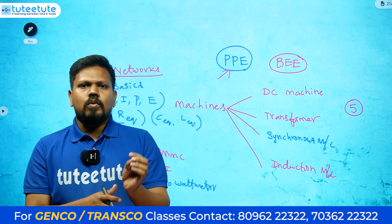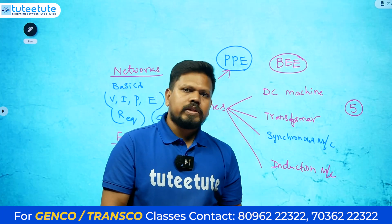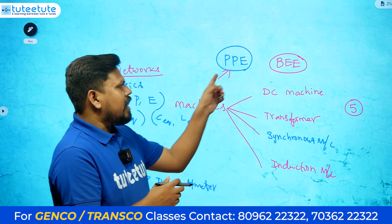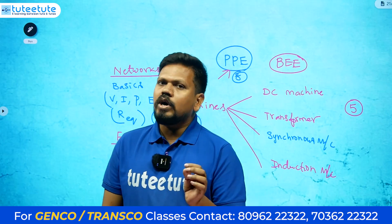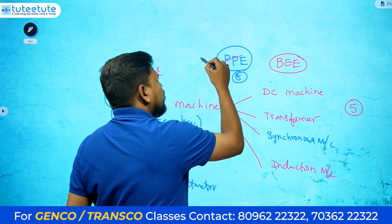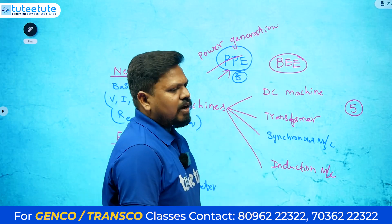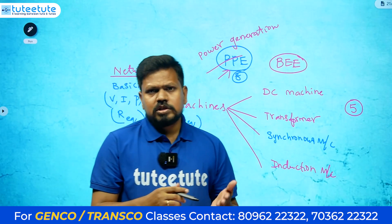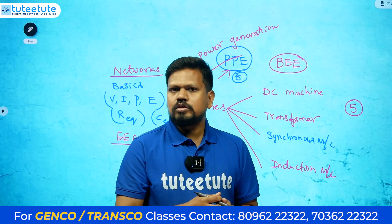They will ask about the inputs, outputs, components, and how the fluxes are flowing in the power plant. We are expecting more than eight questions from power plant engineering — possibly ten, with a minimum of six. Instead of calling it power plant engineering, think of it as power generation concepts: how power generation is happening. Don't get confused — even if PV diagrams or TS diagrams appear, concentrate on the generation concepts.